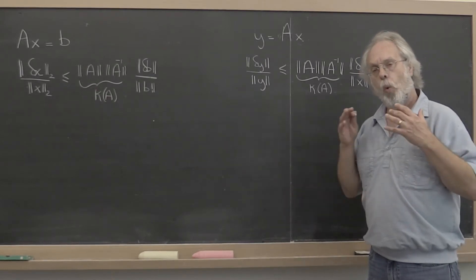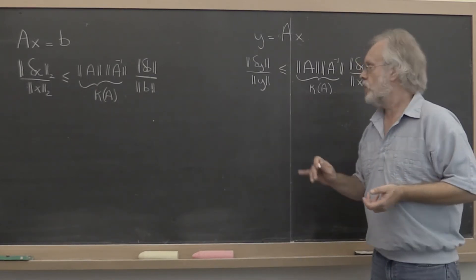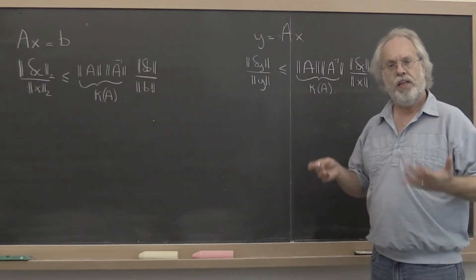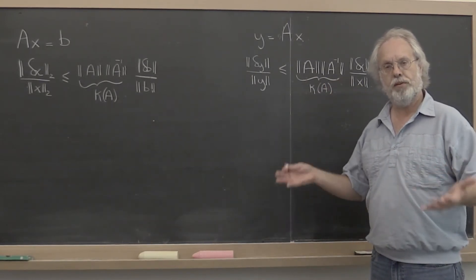Every time you multiply by a matrix, you have the potential of amplifying relative error. That's bad. What if we restricted ourselves to matrices that have a condition number equal to 1? Then the relative error would never be amplified.